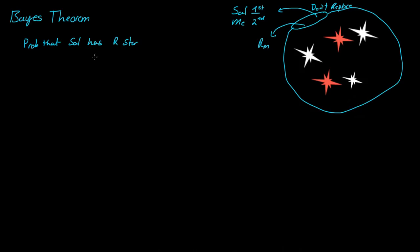So what I'm saying here is we use a given function. We say: what's the probability that Sal has a red star, given that I got a red star?